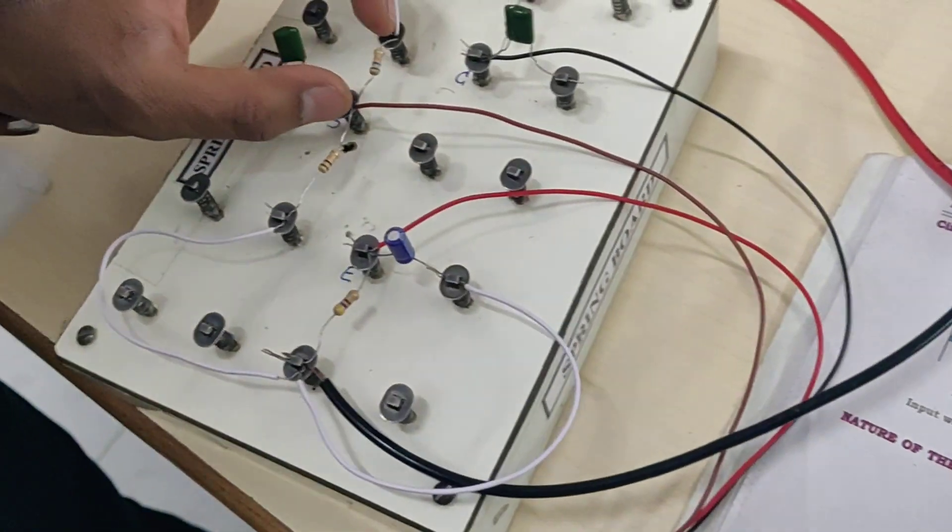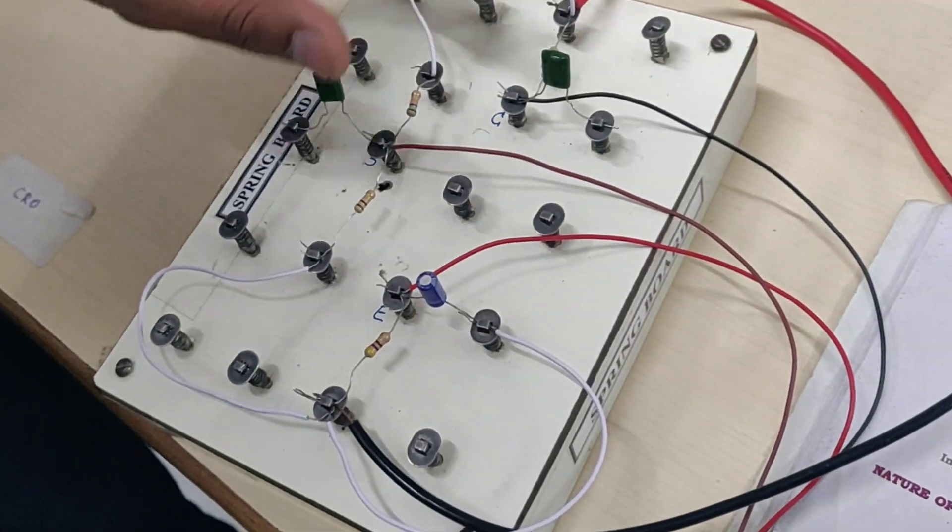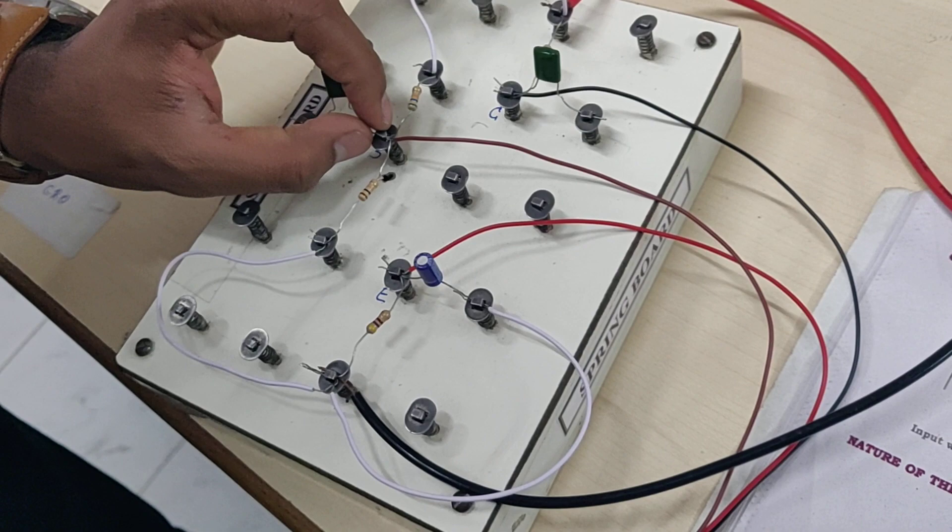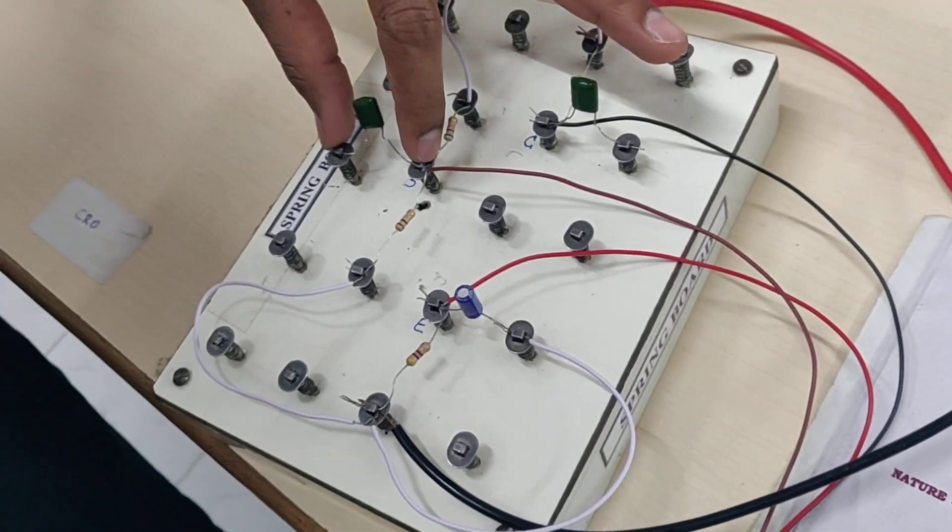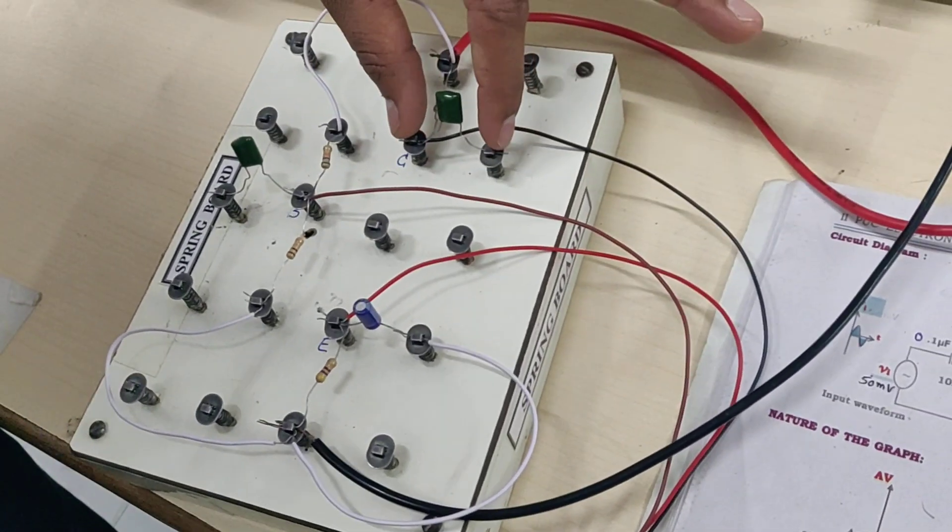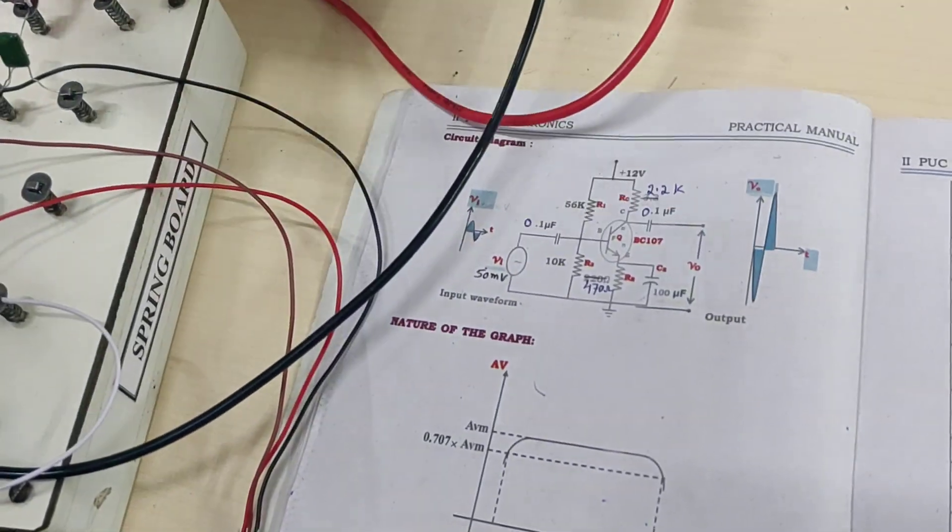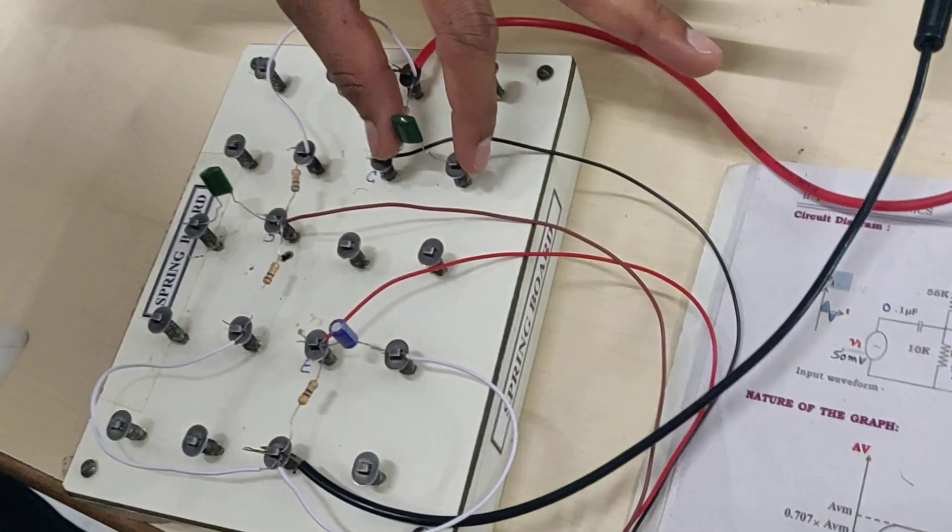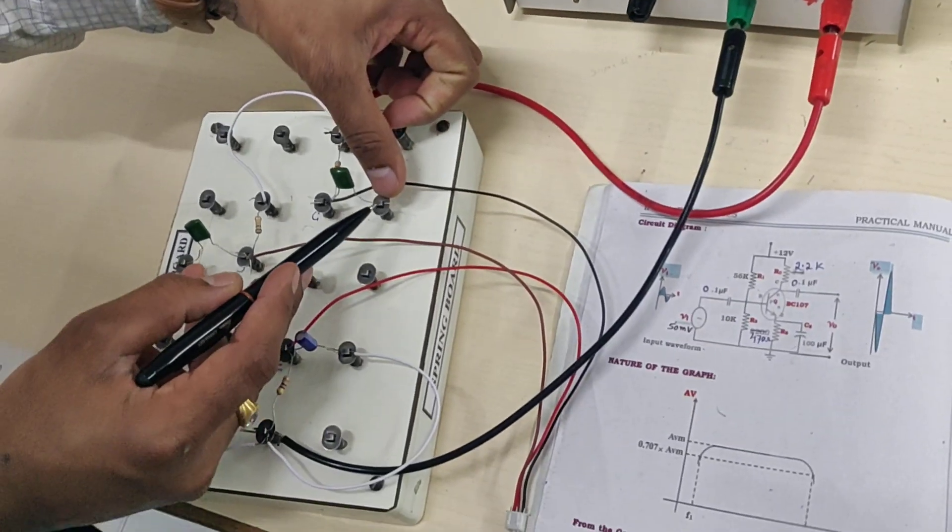Here is 10k, here is 56k, and we have done connections through the base. At the base we have a capacitor at the input, and at the collector terminal we are connecting the output. The other terminal of the capacitor will be the output.